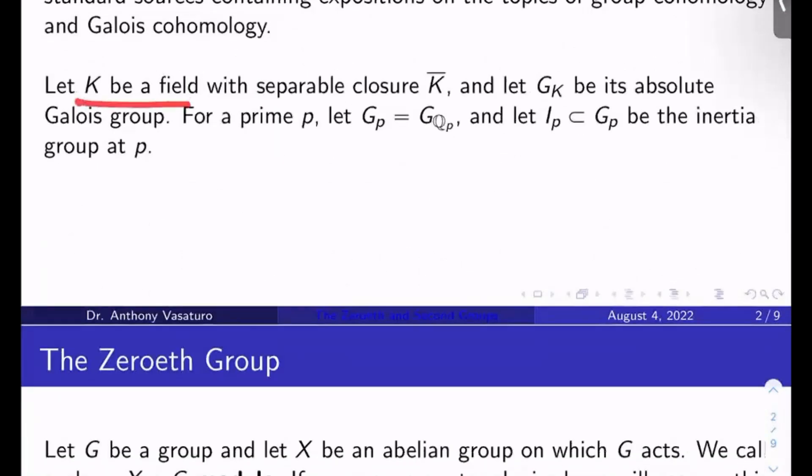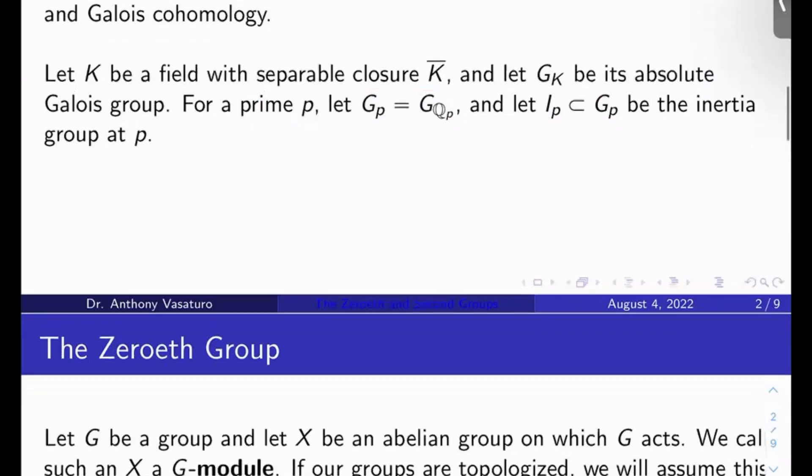The setup here is: let K be a field with separable closure K bar, and let G_K be its absolute Galois group. For a prime p, let G_p be the local Galois group G_{Q_p}, and let I_p ⊂ G_p be the inertia group at p. As usual, all this stuff was defined in videos very early on in the series.